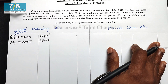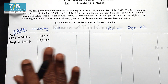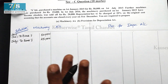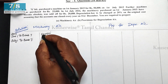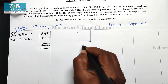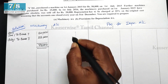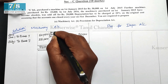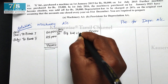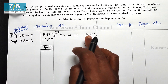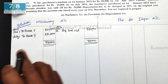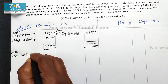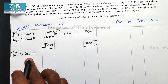Now for the provision for depreciation account, we calculate depreciation at the end of the year. The machinery account is closed at 31st December 2015 with a balancing figure of 75,000, which becomes the opening balance for the next year — 2016 January 1st, balance brought down 75,000.